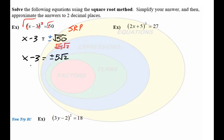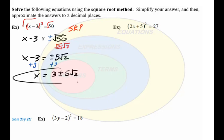To solve for x, we add 3 to both sides, keeping that plus or minus term. We get x equals 3 plus or minus 5 square root of 2. This is the exact answer written in compact form. We simplified the square root, and this is an acceptable answer — these are our exact answers because we're using that radical.